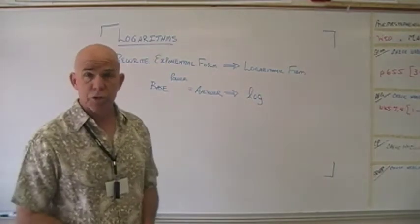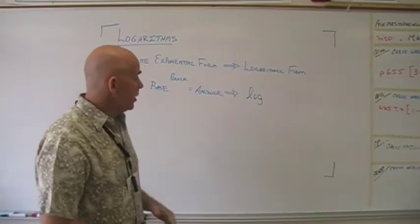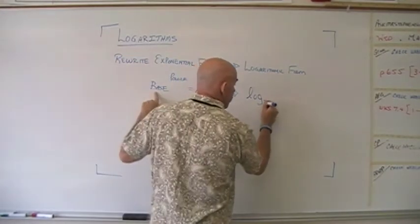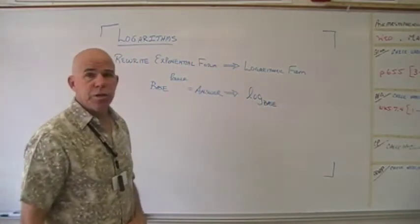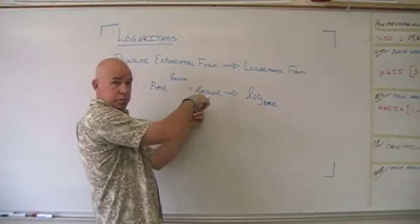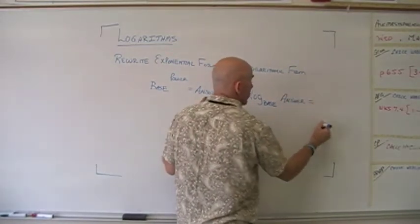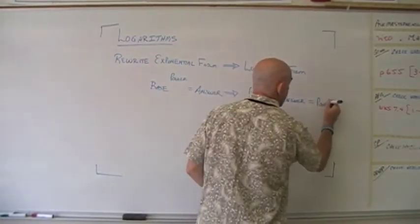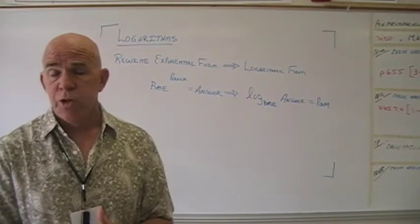We're going to write it with 'log,' which is a short version of logarithmic — you can find that log key on your calculator. We take the base from the exponential and write it in a subscript position, in the lower left-hand corner of log. Then we take the answer from the exponential and write it next to the log, and set that equal to the power.